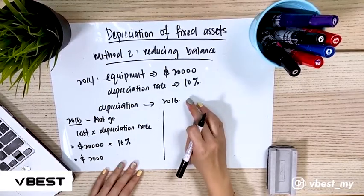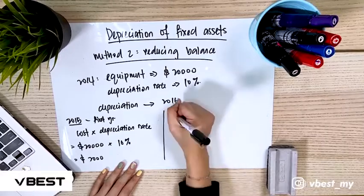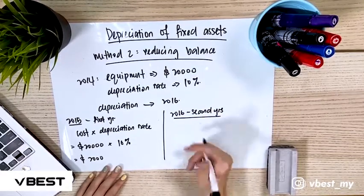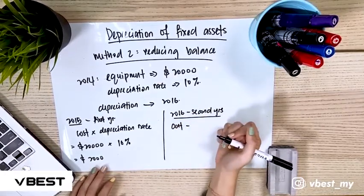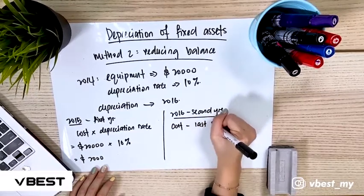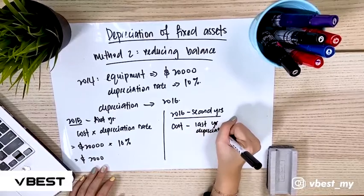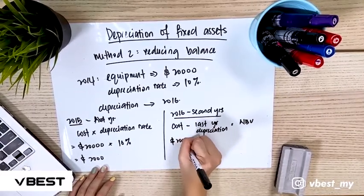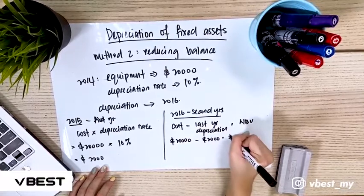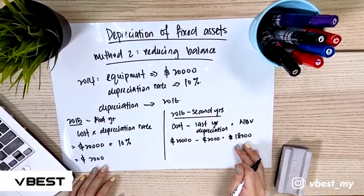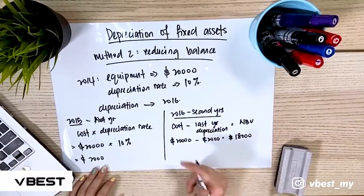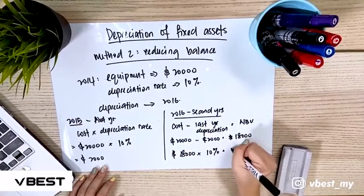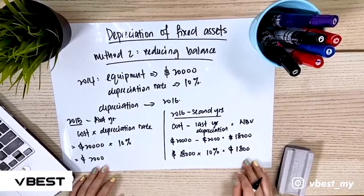Now we calculate the second year, which is 2016. We take the cost of 20,000 and subtract last year's depreciation of 2,000 to get our net book value of 18,000. Then we multiply the net book value by 10%: 18,000 times 10% equals 1,800. That is the depreciation amount for 2016.